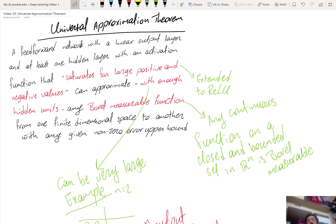So a feed forward network with a linear output layer and at least one hidden layer with an activation function with this property, it saturates for large positive and negative values, can approximate with enough hidden units. We'll discuss that later. Any Borel measurable function and we'll come back. Don't let that intimidate you in any way.